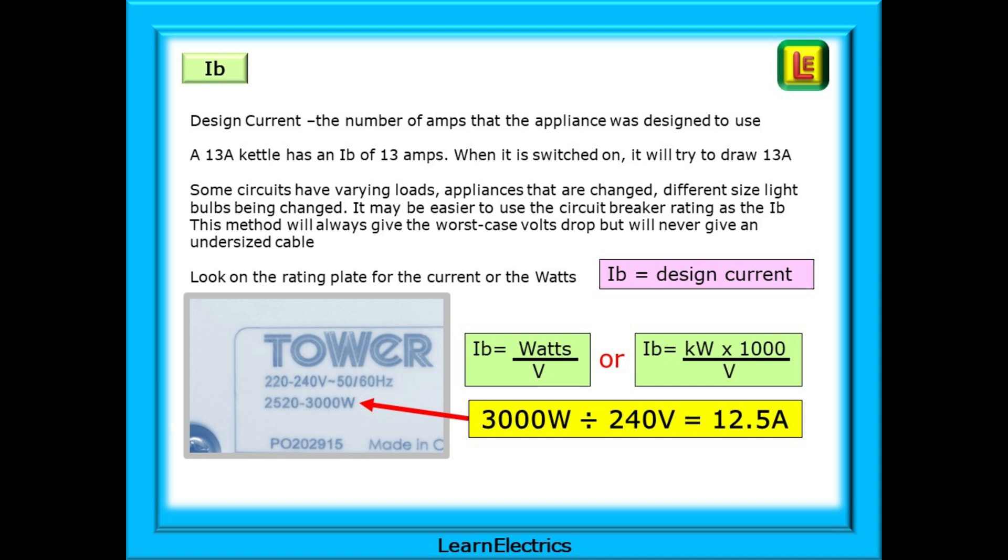IB is the design current, the number of amps that the appliance was designed to use. A 13 amp kettle has an IB of 13 amps. When it's switched on, it will try to draw 13 amps. Some circuits have varying loads or appliances that have changed, different sized light bulbs being changed. It may be easier to use the circuit breaker rating as the IB. This method will always give the worst case volts drop but will never give an undersized cable. Look on the rating plate for the current or the watts.